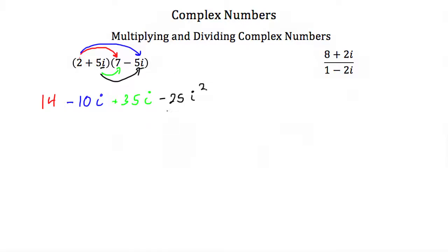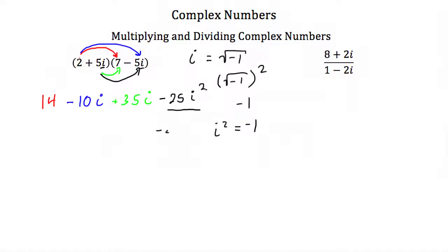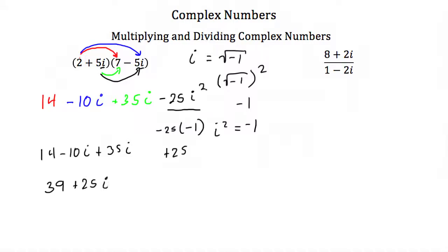Now let's look at this last term more closely. Here we have minus 25i squared. Remember that i is equal to the square root of negative 1, so if you square it, that's just equal to negative 1. So whenever you see i squared, just remember that's equal to negative 1. So here this is really minus 25 times negative 1, or plus 25. So we'd have 14 minus 10i plus 35i plus 25. Combining like terms: 14 and 25 is 39, and minus 10i plus 35i is plus 25i. So 2 plus 5i times 7 minus 5i is just 39 plus 25i.